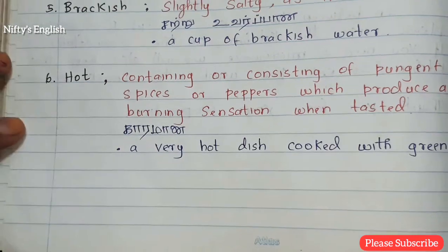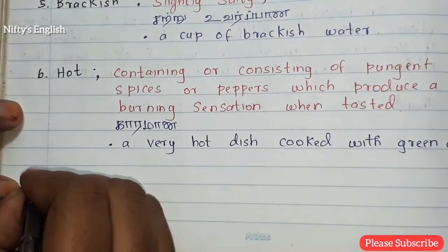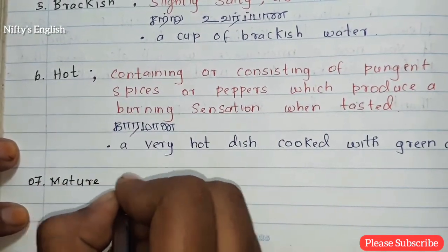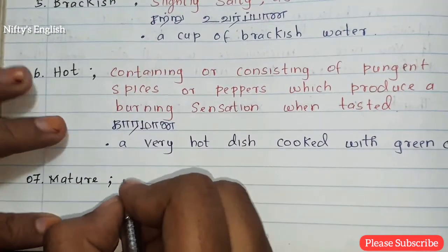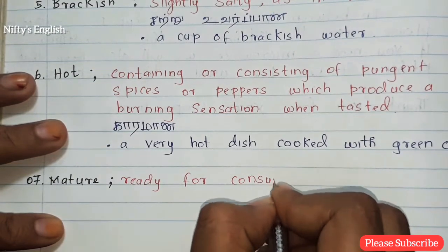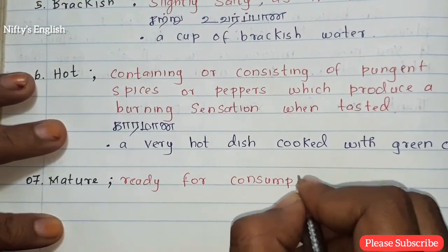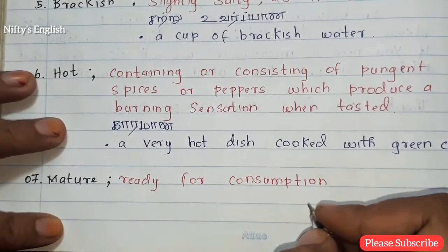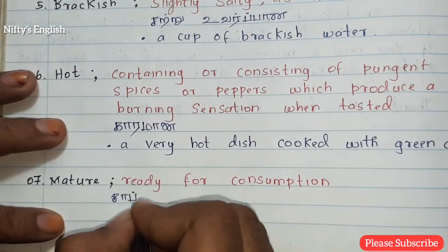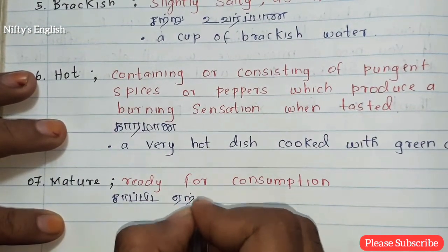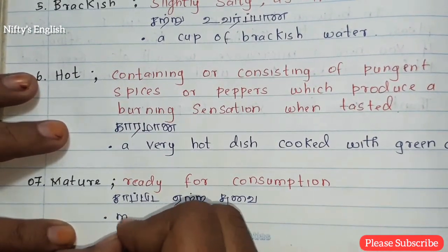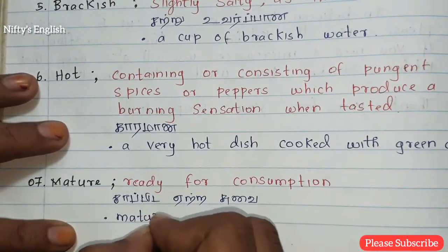The seventh one is mature — ready for consumption. Mature means saapida ready in Tamil. For example: mature cheddar cheese.